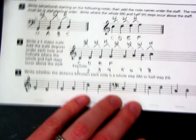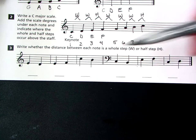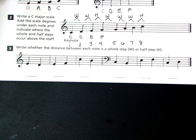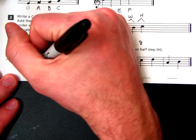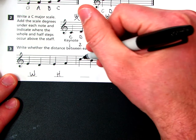Okay, question three says to write whether the distance between each note is a whole step or a half step. Easy enough. We can use the keyboard, probably one on the sheet, or we can refer to our own. So E to D, that's a whole step. E to F is a half step. C to B is a half step. E to F, half step. And then C to D is a whole step.